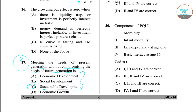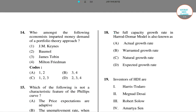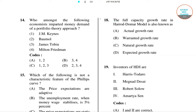Question number 18: 'The full capacity growth rate in the Harrod-Domar model is also known as...' Four options are given, and the right answer is option C, that is natural growth rate.